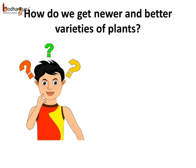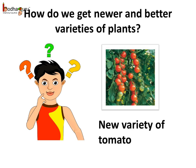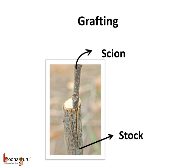Have you ever thought how we get newer and better varieties of plants — especially newer varieties of fruit plants and ornamental plants? It is through an artificial method of vegetative reproduction called grafting. In this technique, branches of different plants are organically joined. The shoot which is transferred is called the scion, and the plant with the roots to which the scion is attached is called the stalk. The stalk provides water and minerals to the scion. With time, new cells develop in the area where they are joined and a new variety of plant develops.